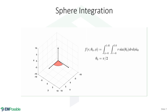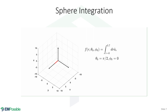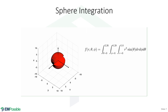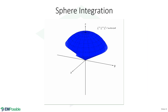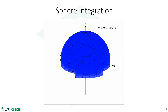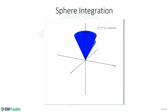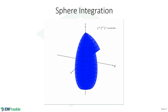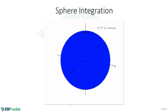Integrating through the volume of a sphere: we integrate along R first, then phi, then theta, and eventually fill in the entire volume of a sphere. For variety, we can also integrate through a sphere in a different order — for example, R then phi, or R then theta then phi — and we still fill in the sphere. Any of these orders work, and we may choose one or the other just due to convenience.